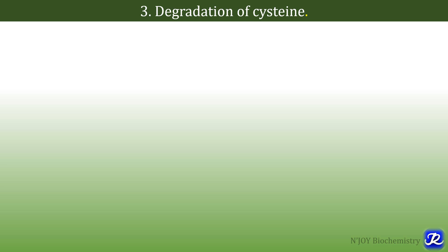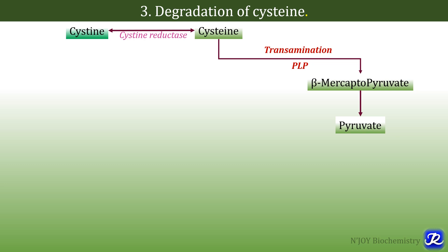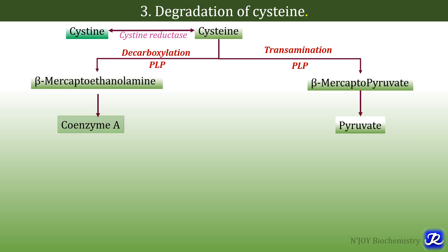The third important step is the degradation of cysteine. Cysteine can be converted to cystine by cysteine reductase, then transaminated to beta-mercaptopyruvate and ultimately to pyruvate — this transamination is PLP dependent. Second, cysteine can undergo decarboxylation with the help of pyridoxal phosphate to form beta-mercaptoethanolamine, which is involved in synthesis of coenzyme A — that is how coenzyme A is synthesized from cysteine.